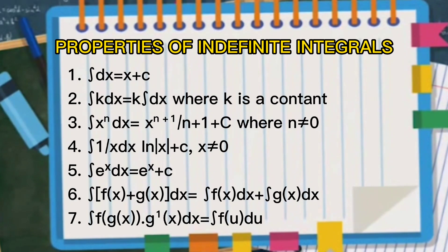The last, property number seven: the integral of f(g(x)) times g prime of x dx is equal to the integral of f(u) du. Those are the seven properties of indefinite integrals, and it is necessary to familiarize or memorize these properties for use in our examples.